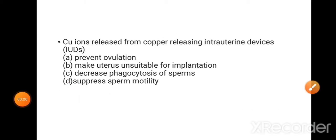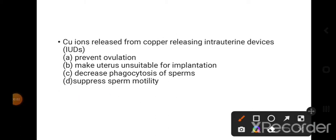This is the right statement: copper ions released from copper-releasing IUDs prevent ovulation, make uterus unsuitable for implantation, decrease phagocytosis of sperm, and suppress sperm motility. This is the right option, because copper suppresses sperm motility.